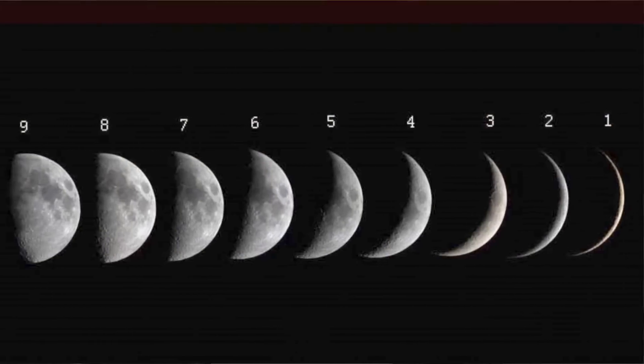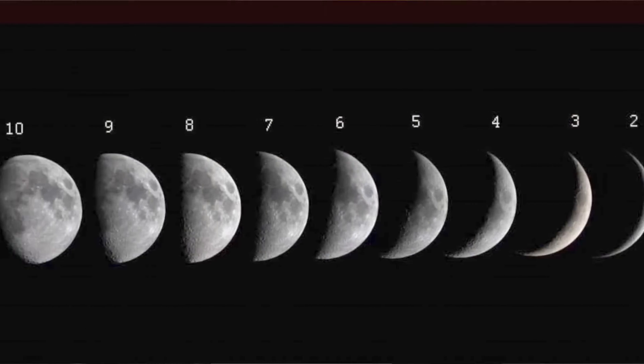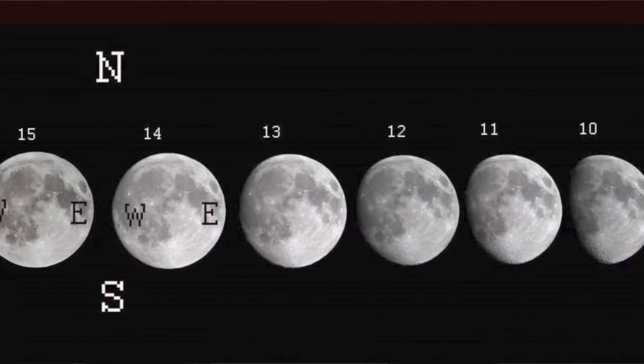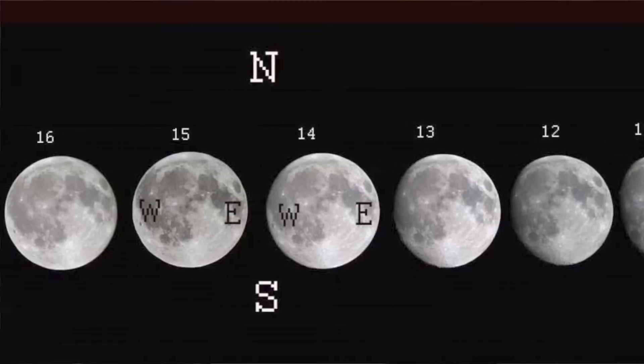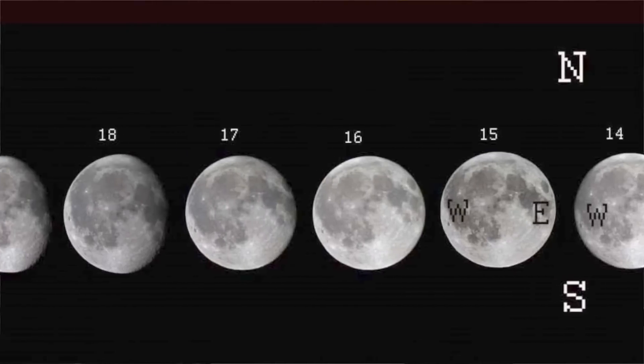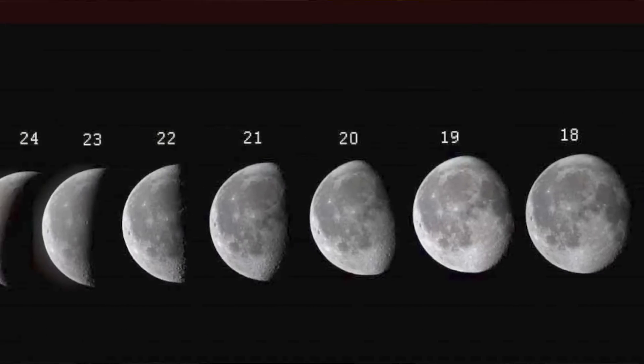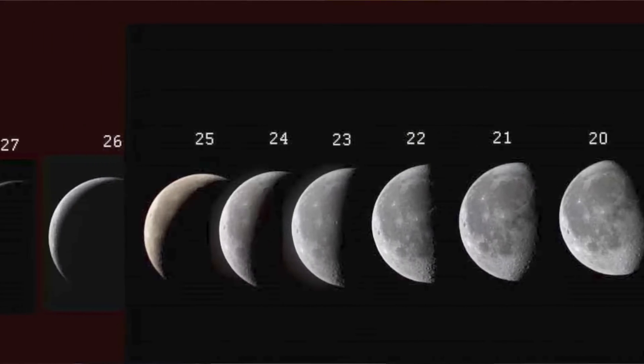The Moon goes through a whole cycle of phases throughout the month as it orbits the Earth in one month's time. It starts off as new, then it goes to a waxing crescent, a first quarter, then a waxing gibbous, then full, then waning gibbous, and then after that is third quarter, then waning crescent, and then back to new Moon.